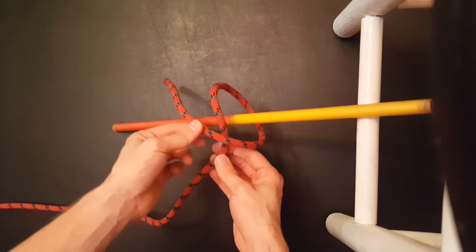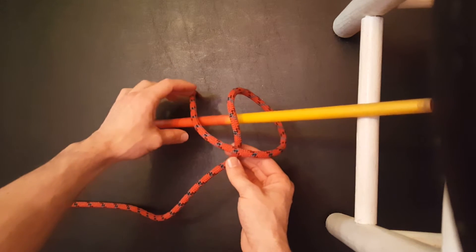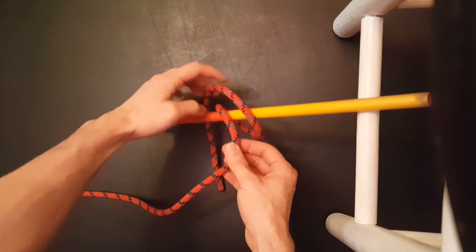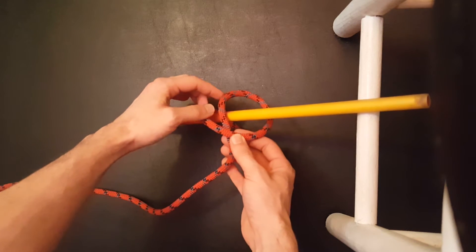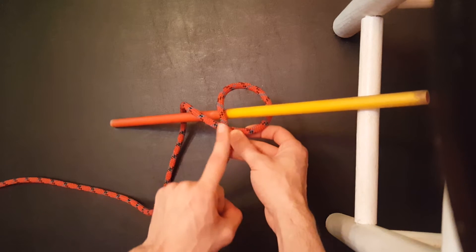As we continue to wrap in the same direction, we're going to come up from the bottom here. So we wrapped around, and now where my thumb is at this X point, we're going to take our working end and go right up alongside here.